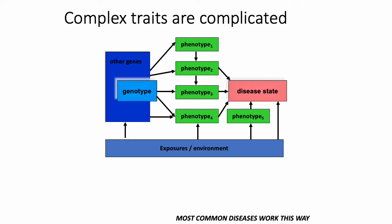One of the hallmark characteristics of complex traits is that genetic variants associated with those traits tend to have lower effect sizes than in Mendelian disorders. Genetic variants associated with complex traits don't have as much individual effect because, as opposed to Mendelian disorders, you have hundreds or thousands of genes contributing to variation in the trait.